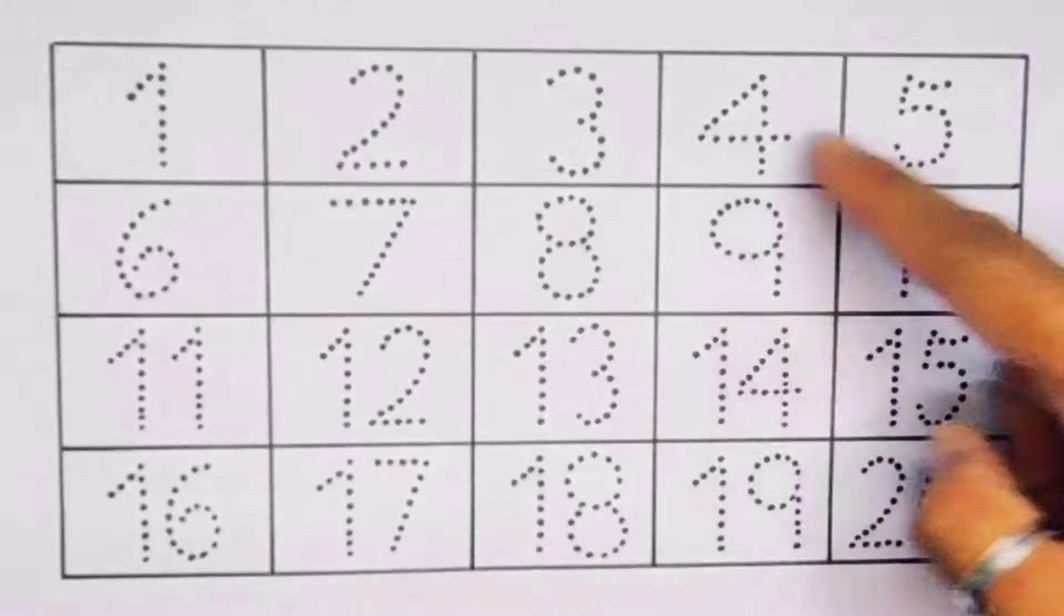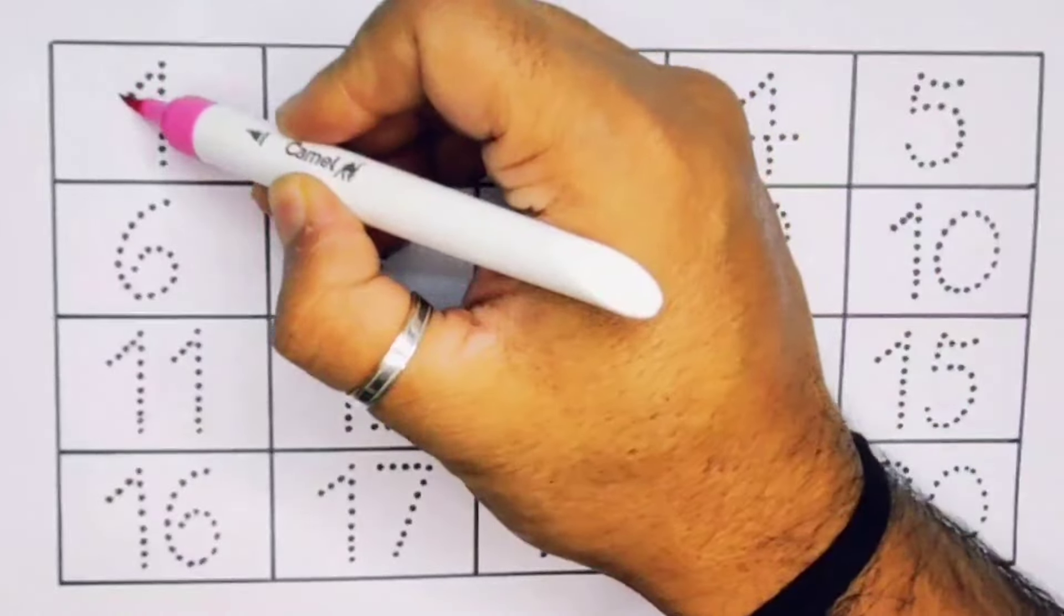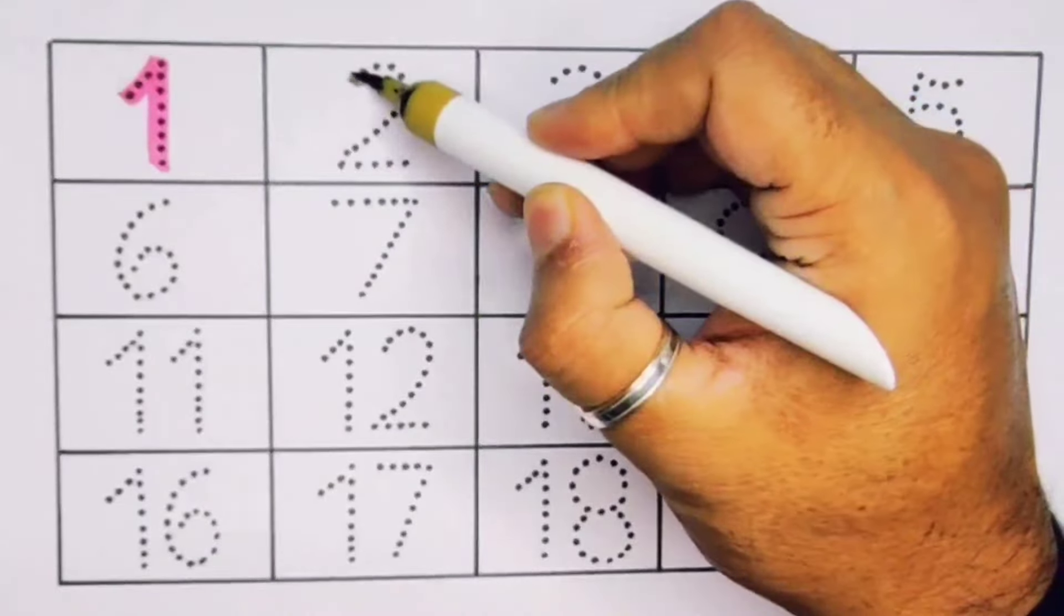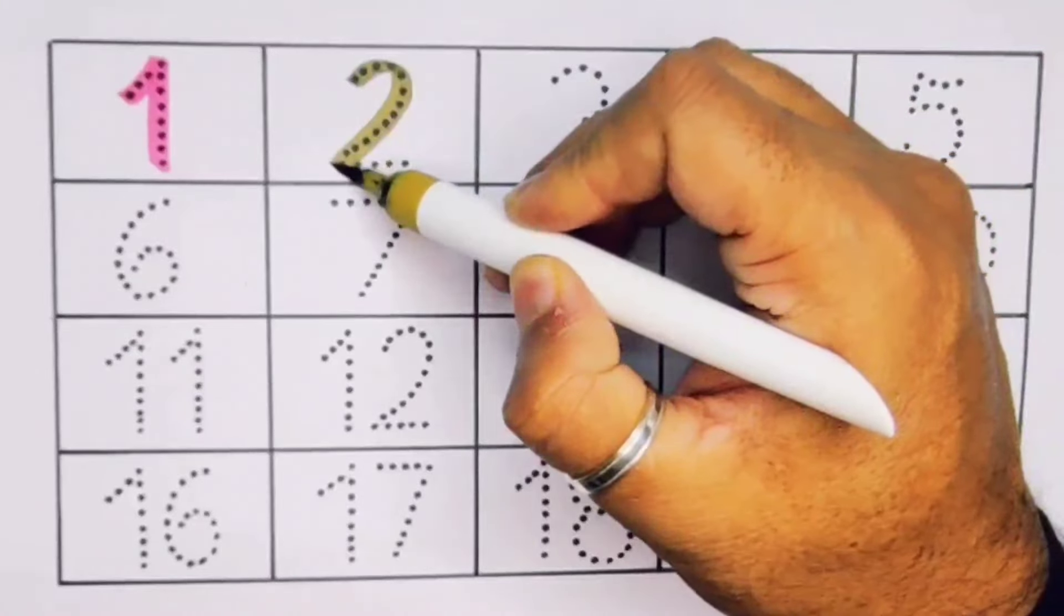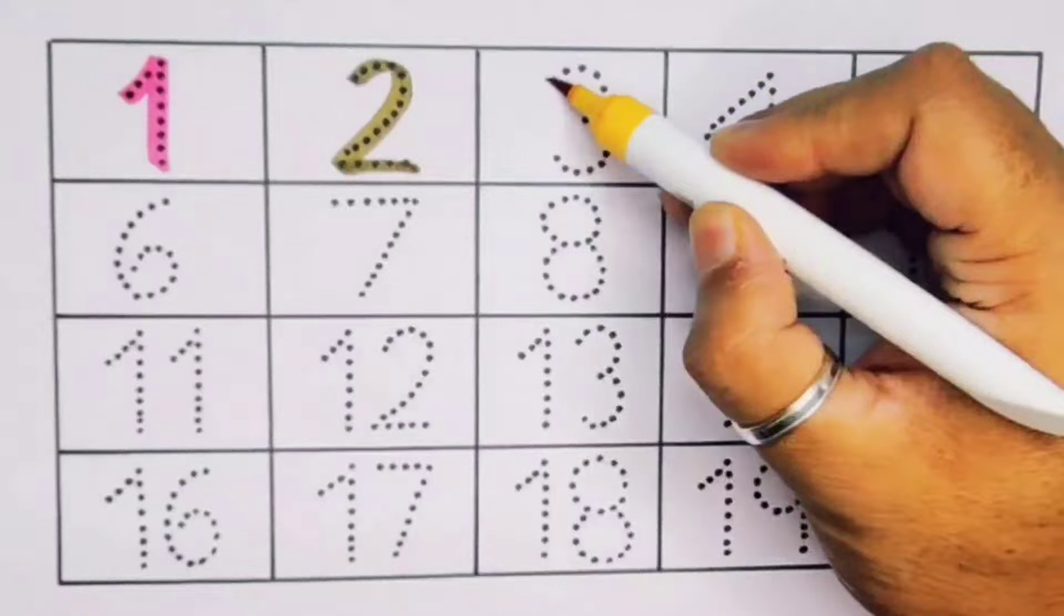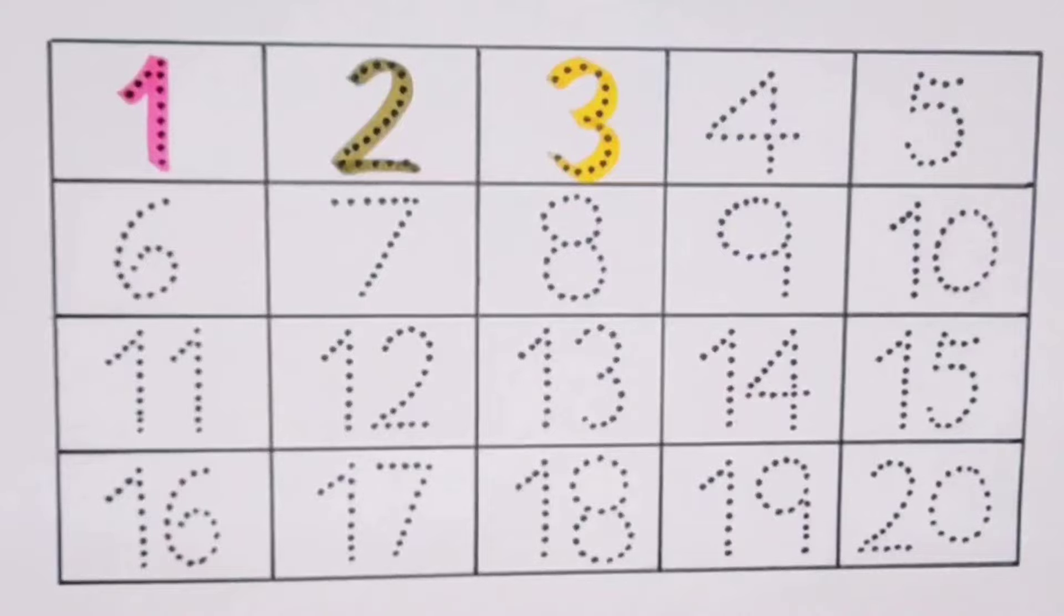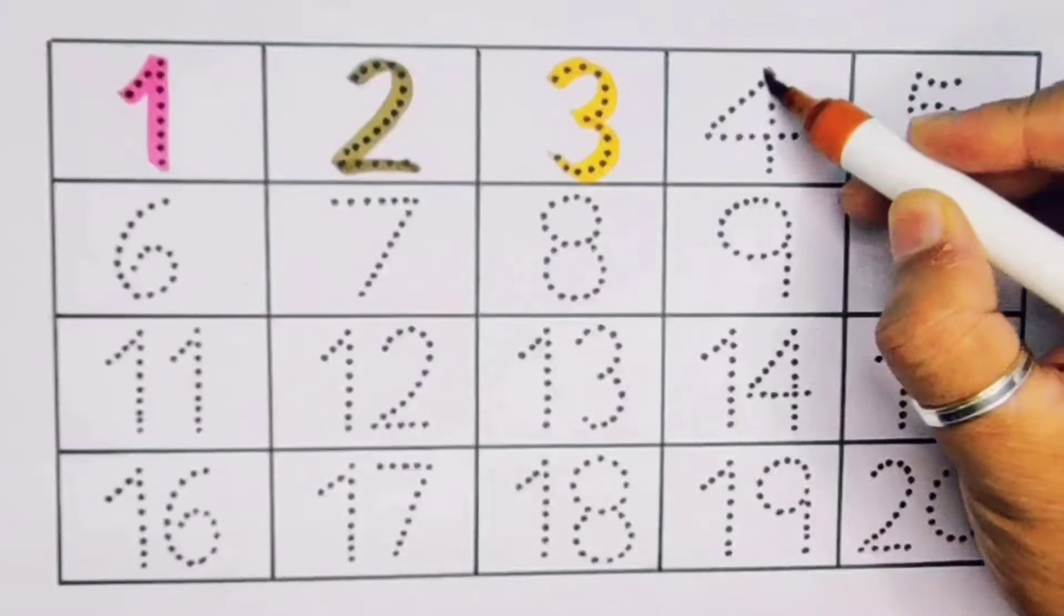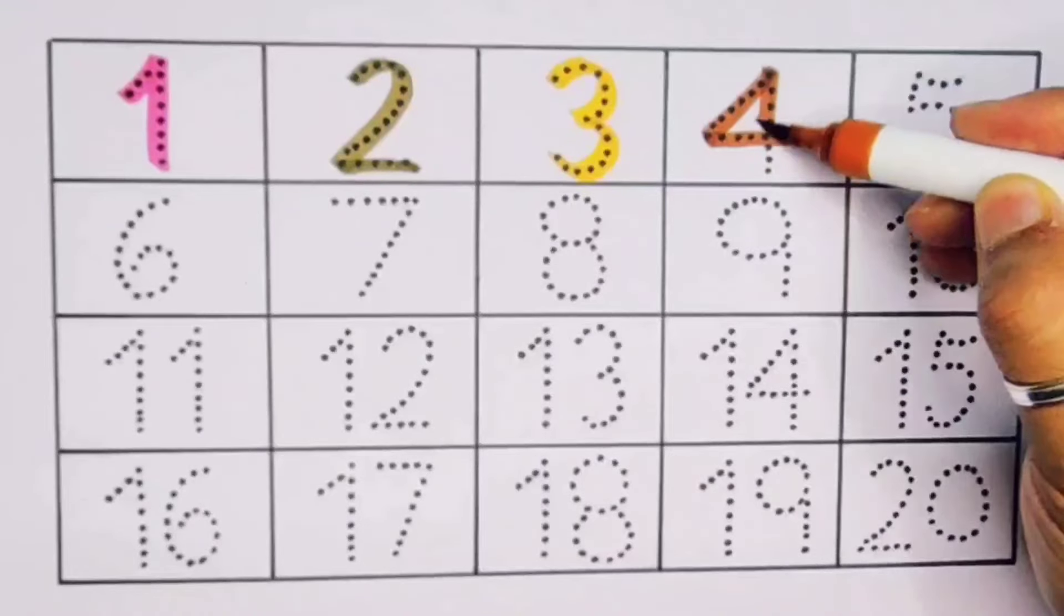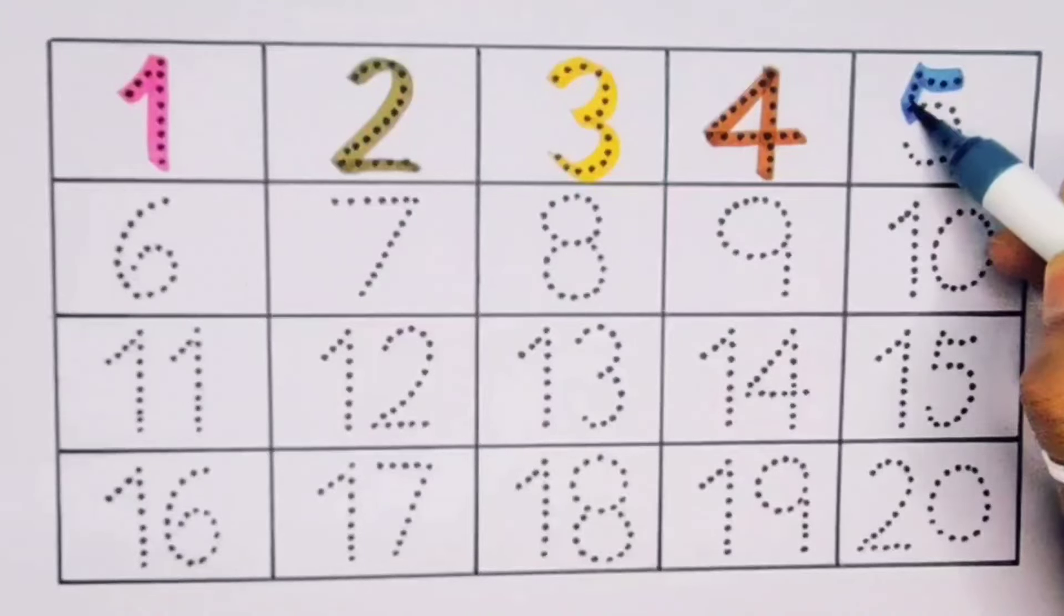Now let's learn the numbers counting 1 to 20. First 1, number 1, next 2, number 2, next 3, number 3, next 4, number 4.